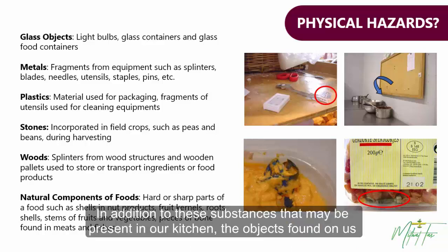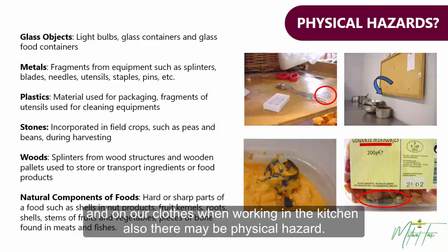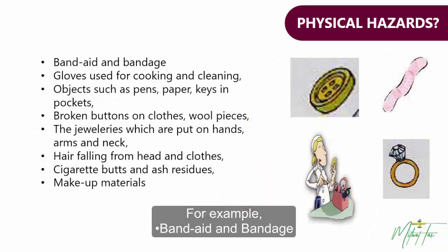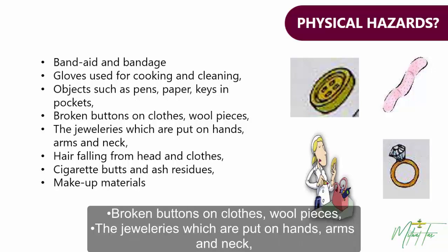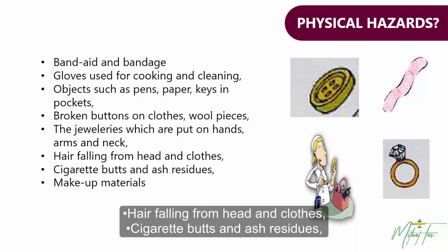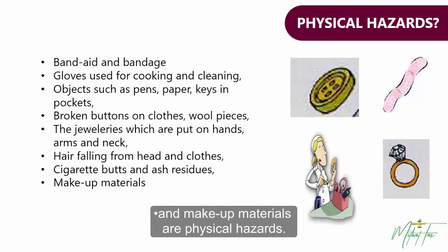In addition to these substances, objects formed on us and on our clothes when working in the kitchen may also be a physical hazard. For example, band aids and bandages, gloves used for cooking and cleaning, objects such as pens, paper, and keys in pockets, broken buttons on clothes, wool pieces, jewelry worn on hands, arms and neck, hair falling from hats and clothes, cigarette butts and ash residues, and makeup materials.